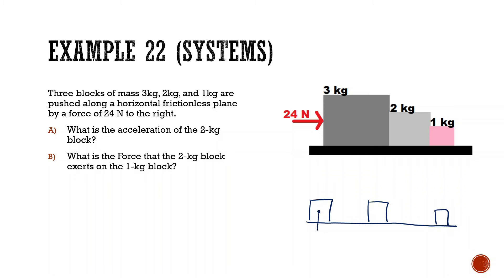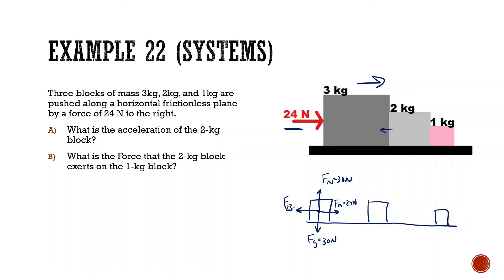For the 3 kg block: force of gravity 30 N, force normal 30 N, force applied 24 N. As it moves to the right, the 2 kg block pushes back on it — I'll call this the force that the 2 kg block exerts on the 3 kg block.